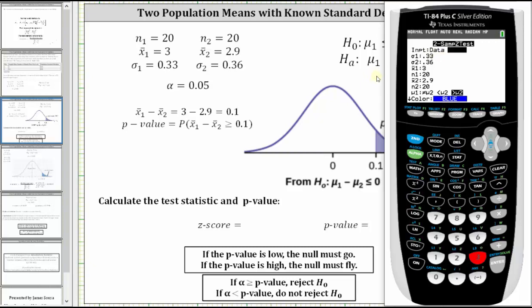I've already entered the key information, but let's review it. The input is stats. σ₁ is 0.33, σ₂ is 0.36, x̄₁ is 3, n₁ is 20, x̄₂ is 2.9, n₂ is 20.